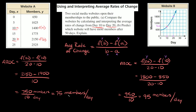So website A is growing at 75 members per day from day 10 to day 20, and website B is growing at 95 members per day from day 10 to day 20. So in this specific range from day 10 to day 20, website B is growing faster.